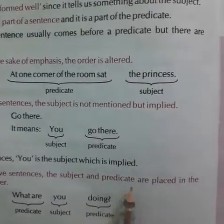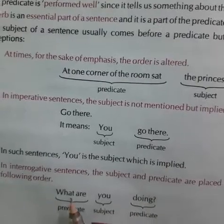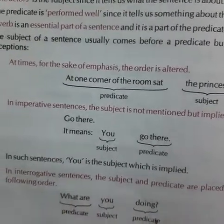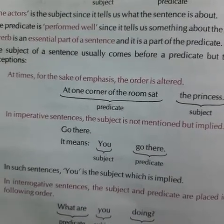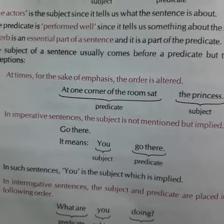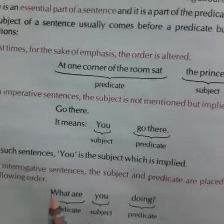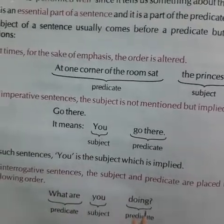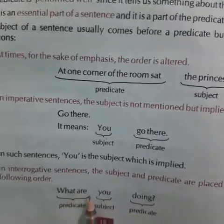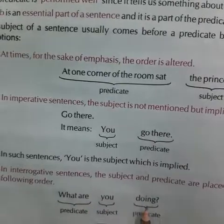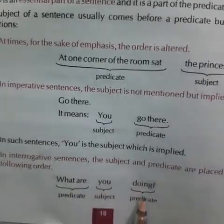In interrogative sentences, the subject and predicate are placed in a different order. For example, 'What are you doing?' Here in the interrogative sentence, whom are we talking about? We are talking about 'you.' So 'you' is the subject and the remaining parts are the predicate.